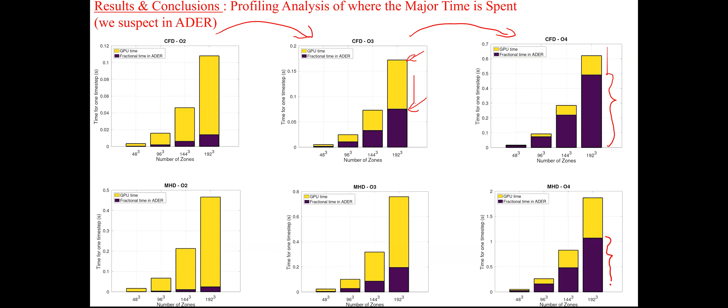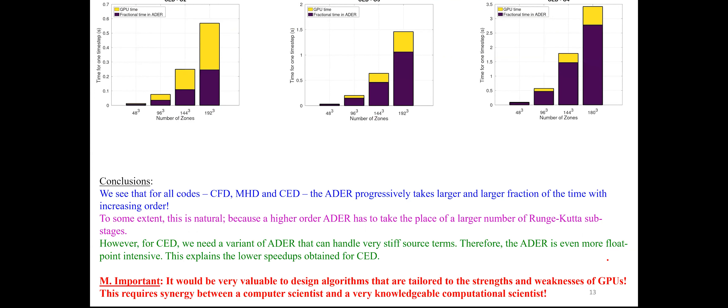This is noticeable even for MHD, but for CED the ADER step takes a gigantic amount of the processing time. To some extent it is natural that ADER takes a larger fraction, because it's filling in for a larger number of Runge-Kutta sub-stages as you go to higher order. But this shows that for certain application classes — namely CED — we do have a problem, and we need to design better algorithms to perform optimally on GPUs.